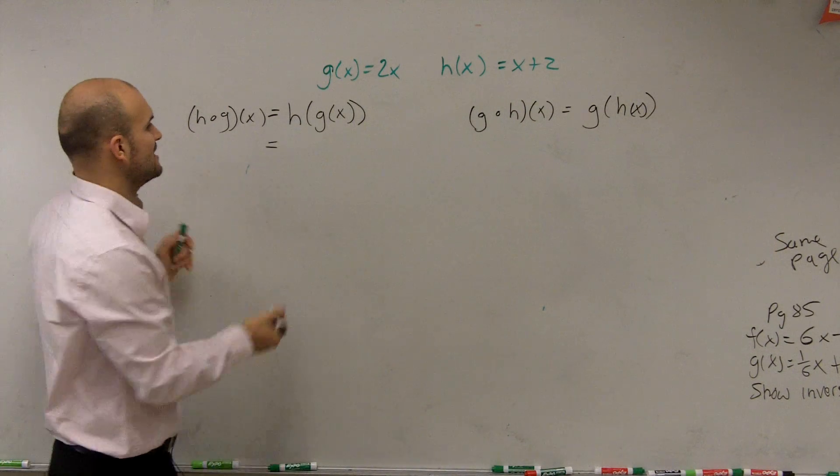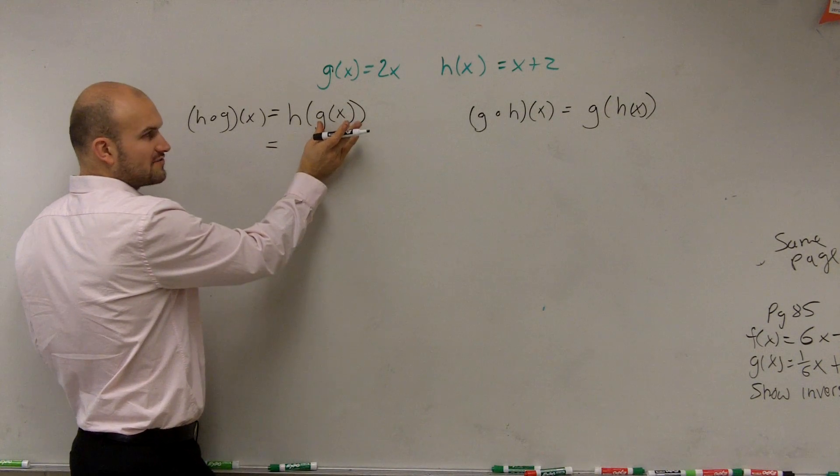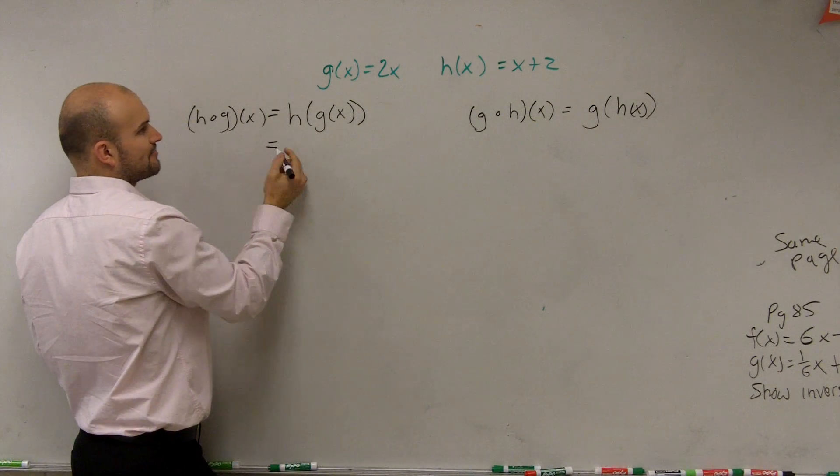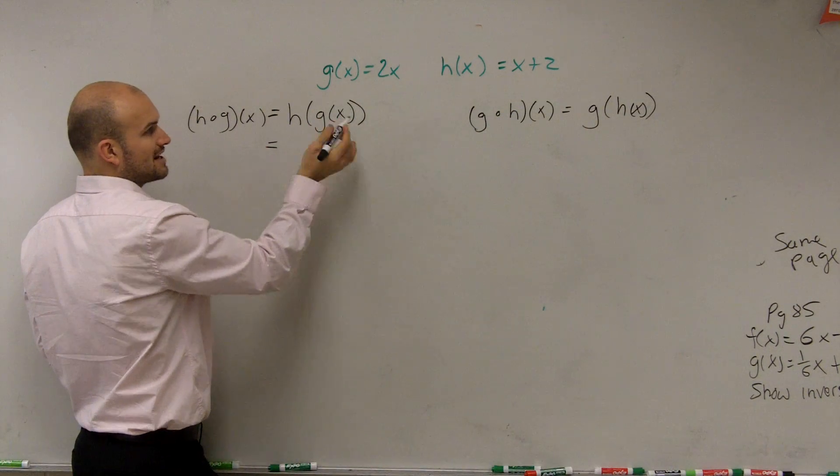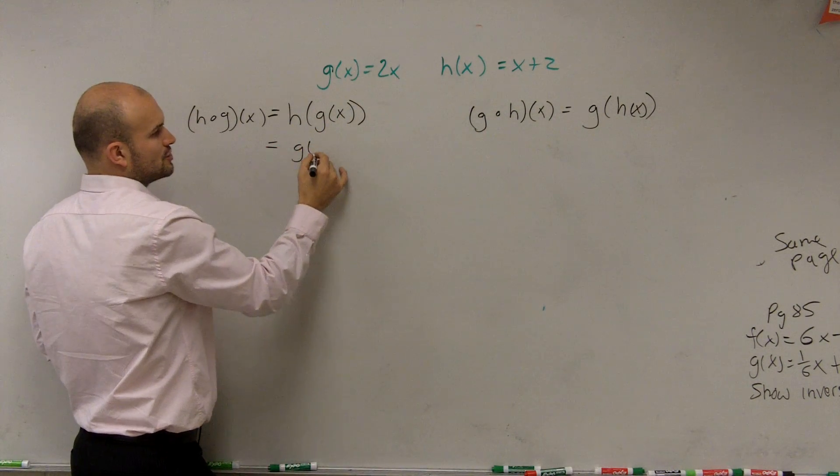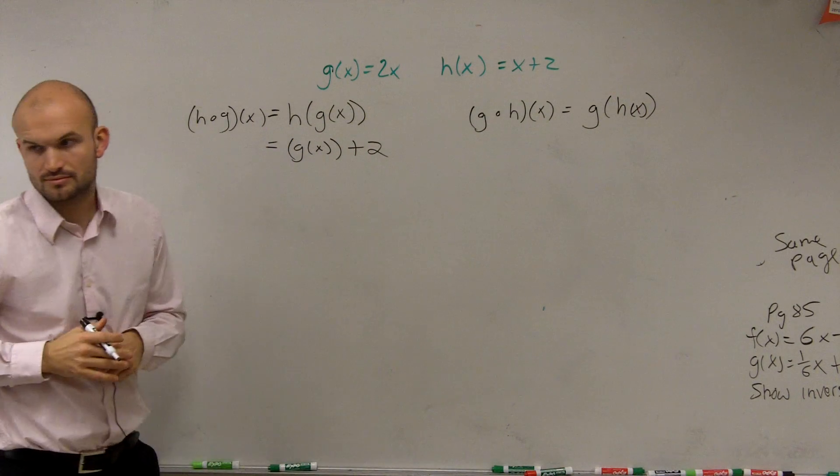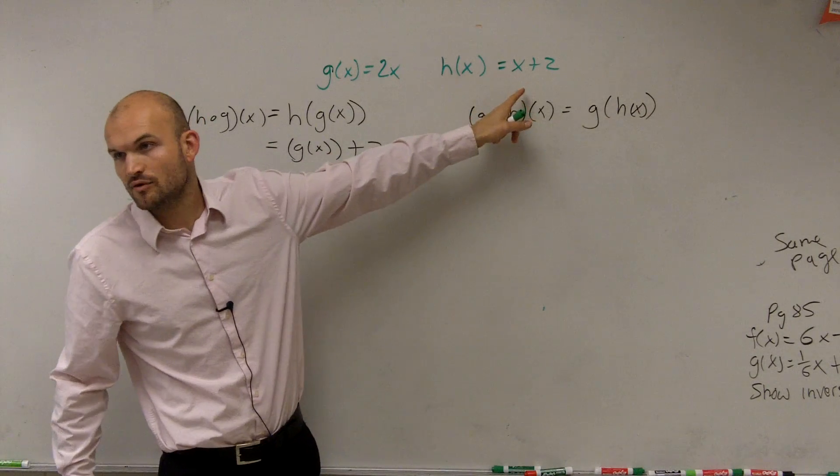So what I'm doing is I'm plugging the g of x function into the h of x function. So I say h of x we know is going to equal x plus 2. But if I take the g of x function into x plus 2, it's going to look like this: g of x plus 2. So what I'm doing is I'm taking the g of x function and plugging it in for x.